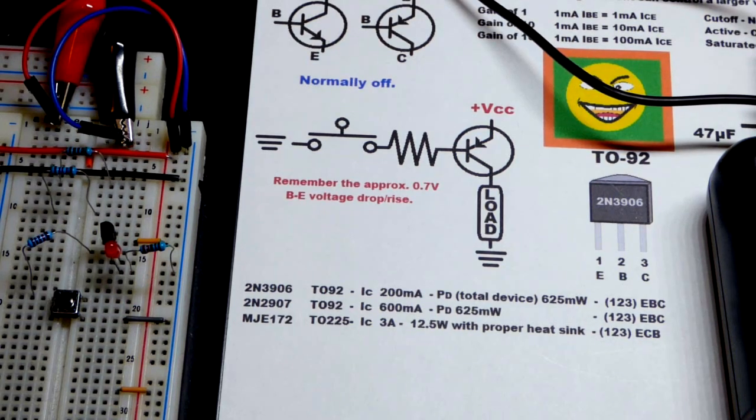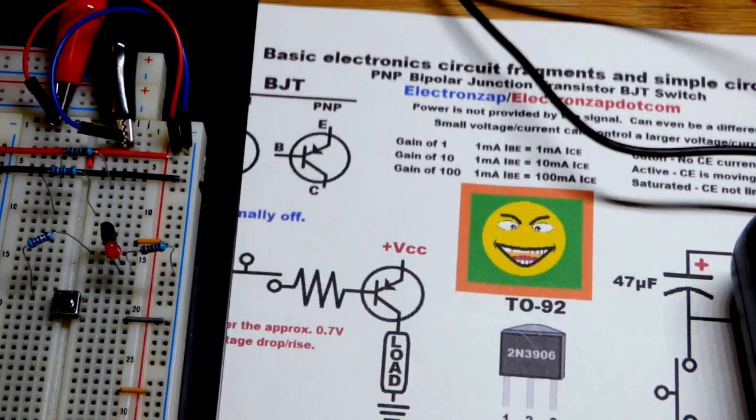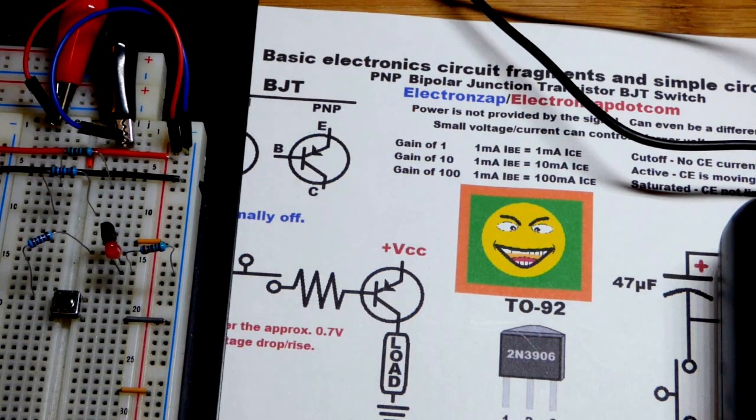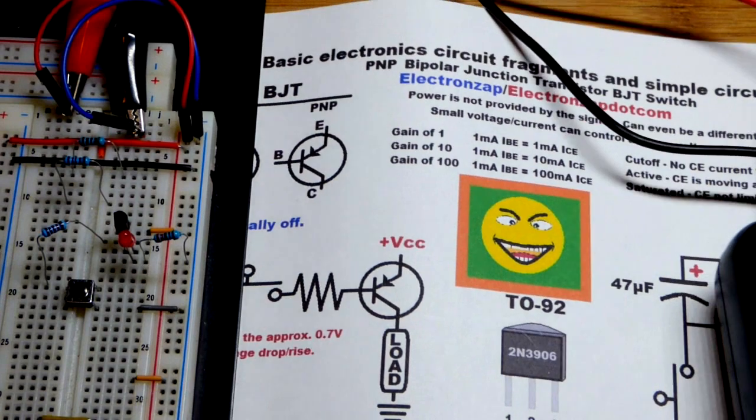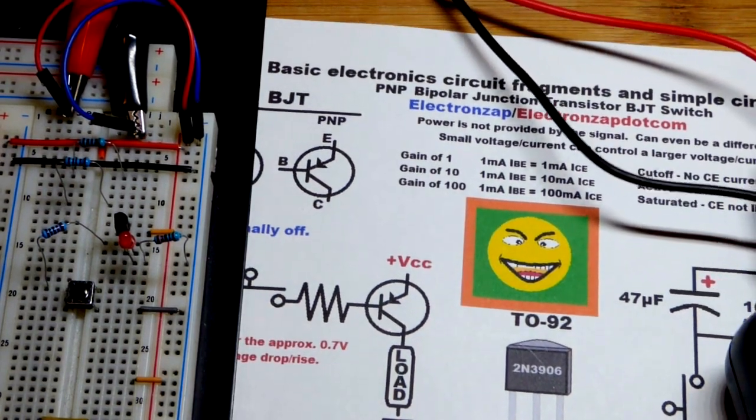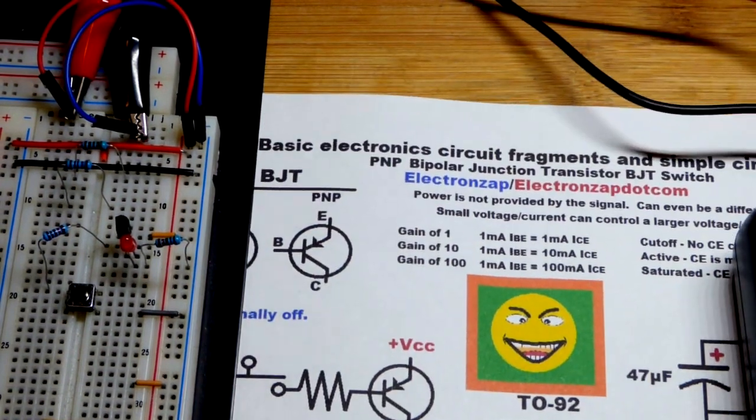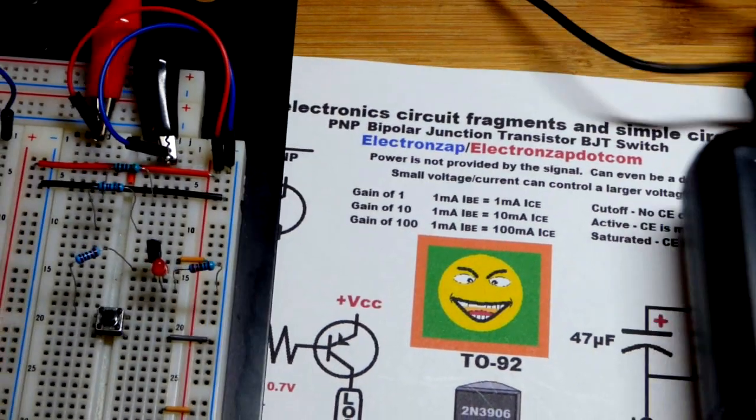In any case, that is really about all you need to know. If you understand the PNP transistor, or the NPN transistor, which is the first one generally everybody learns, you don't have to, but that's usually the order you learn them. That's the order that I covered them.